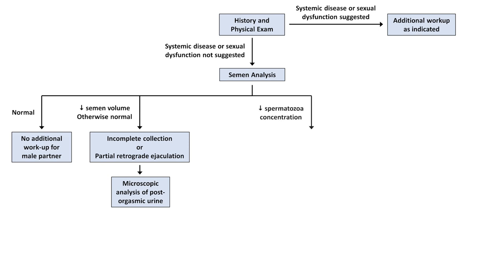If there is decreased spermatozoa concentration, irrespective of volume, the next step is imaging of the GU system with either scrotal and or transrectal ultrasound, along with measurements of testosterone, LH, and FSH.